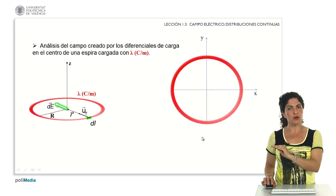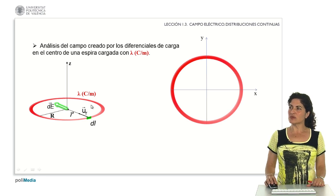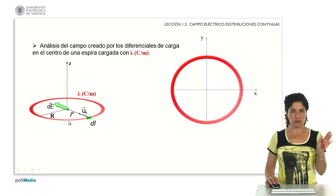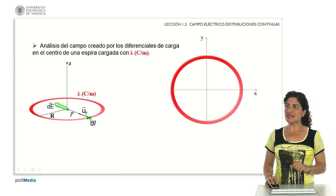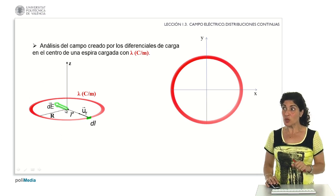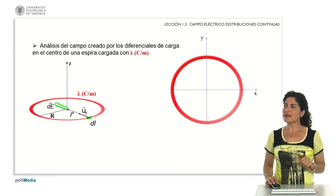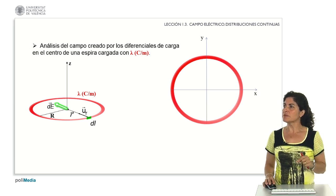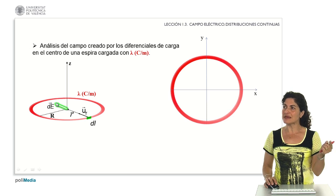Let's look at a simple example. Consider a charge loop with a positive longitudinal charge density, with a density of some value in Coulombs per meter. If I want to know the field this loop generates at its center — placing a Cartesian coordinate reference system centered at that center — I analyze each length differential and its contribution to the center. Each length differential has a charge differential, which contributes a field differential to the total field.